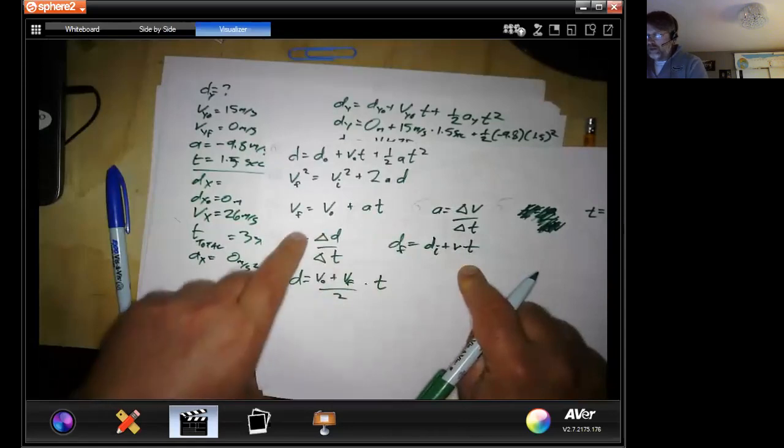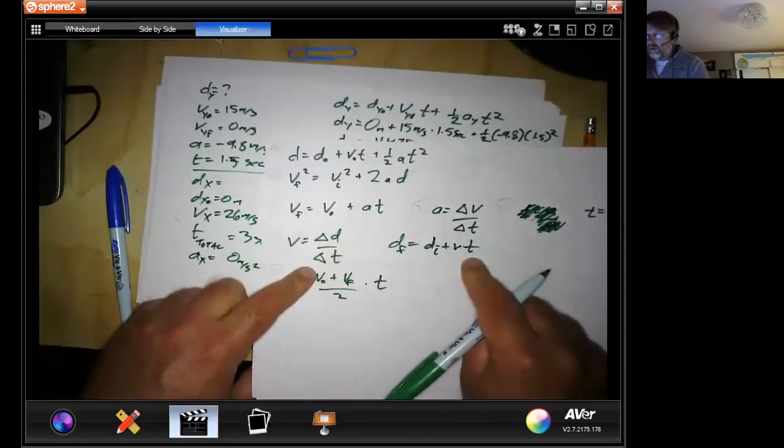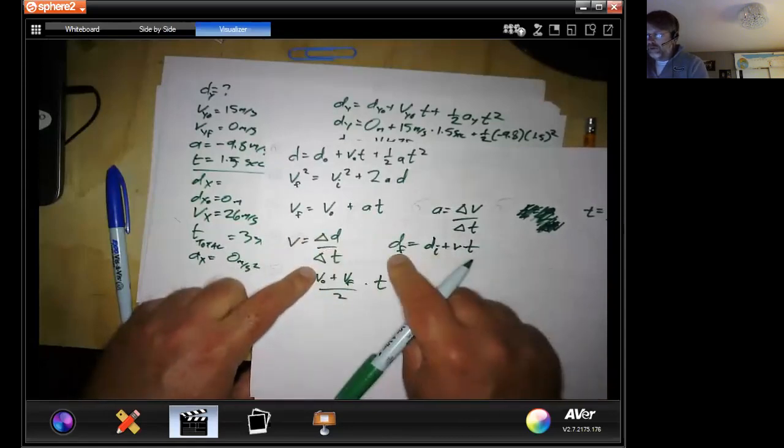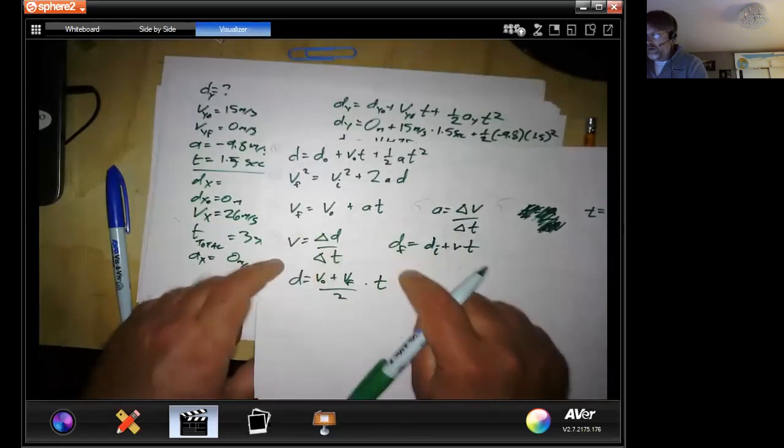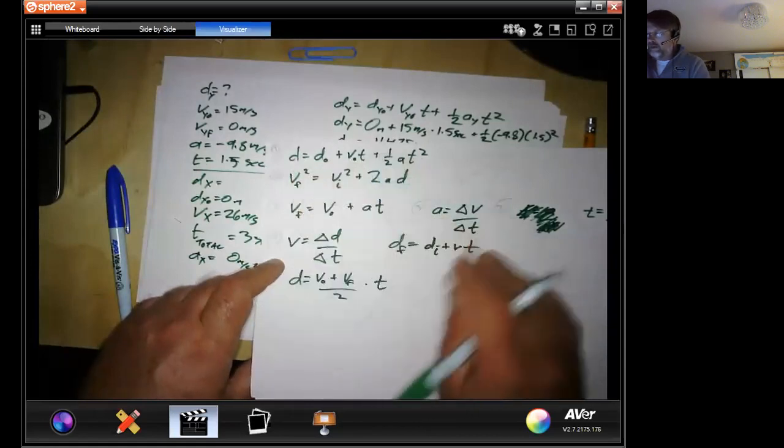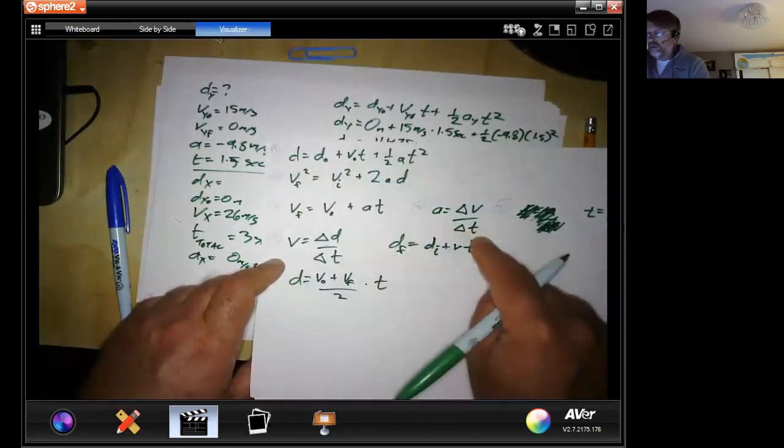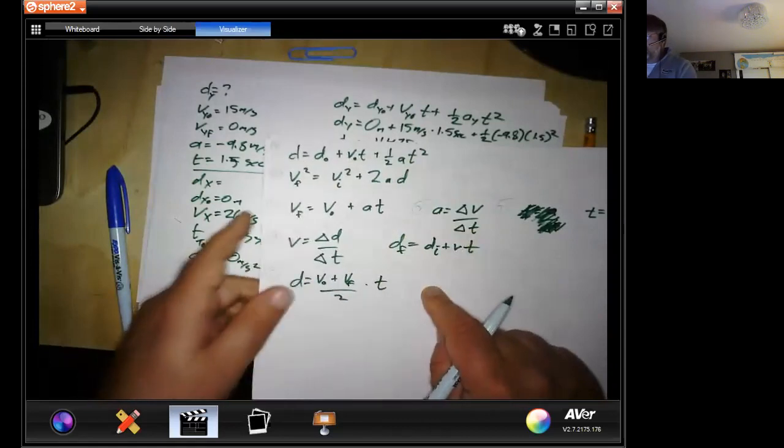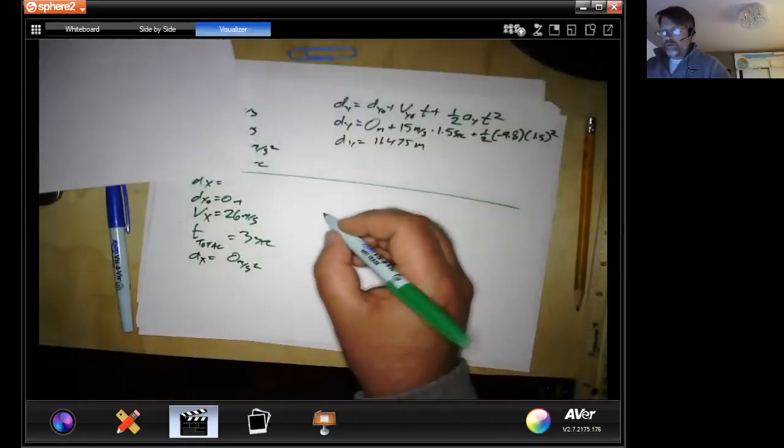Plugging it into this one will give us our initial or final distance. You could have plugged it into this, that would have been a zero. And then you would have gotten basically this equation. So that's what I'm going to do.